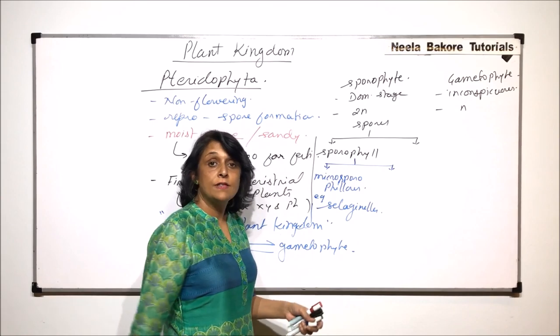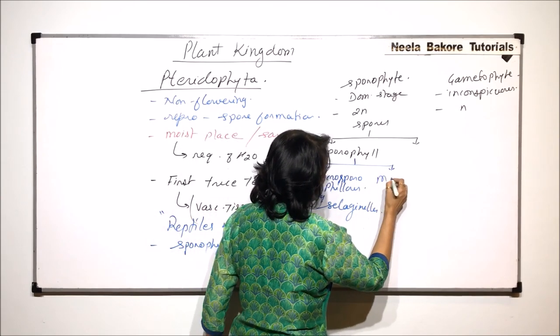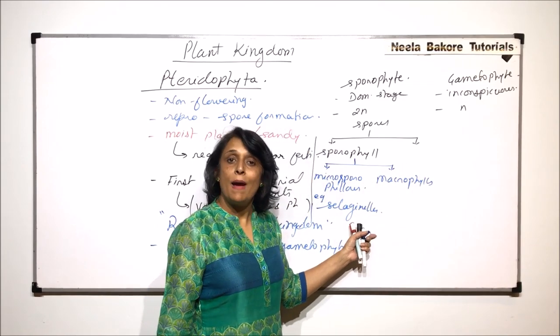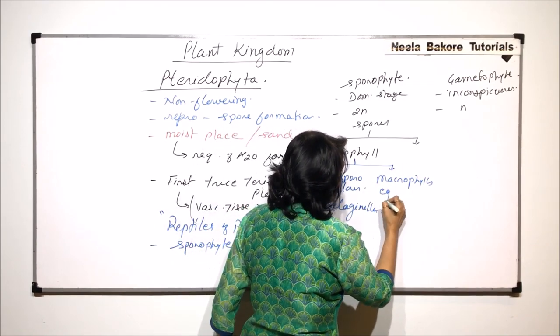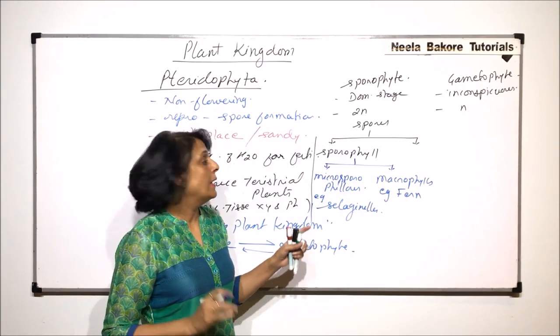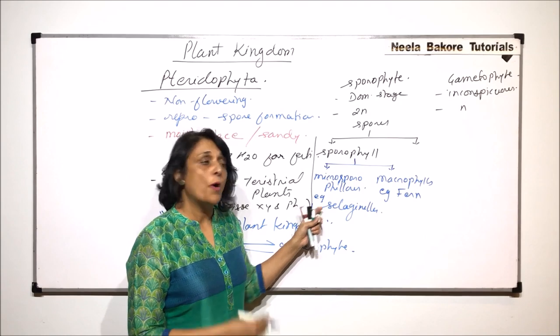And if the leaves are big, then they are called the macrophylls, and the plant will be called macrophyllous. And here the example is of fern, where the leaves are pretty big. This is where the spores can be formed.